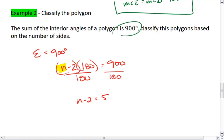This tells me that my figure has 5 triangles in it. I then add 2 to both sides. I get n equals 7. This is a 7 sided figure or a heptagon.